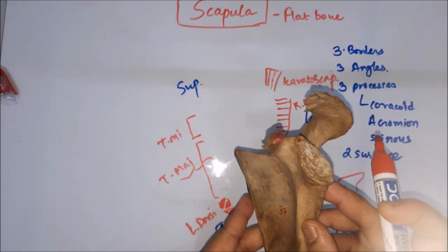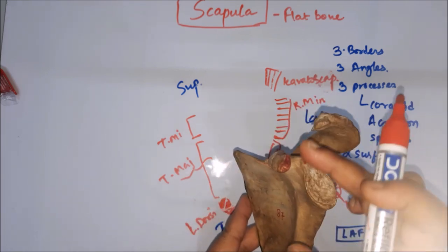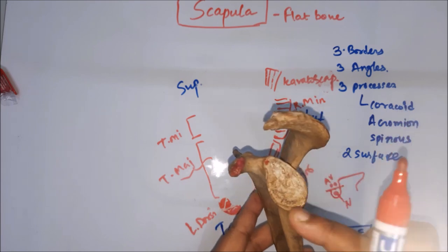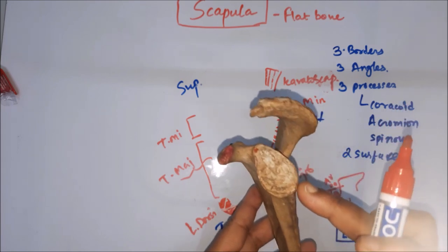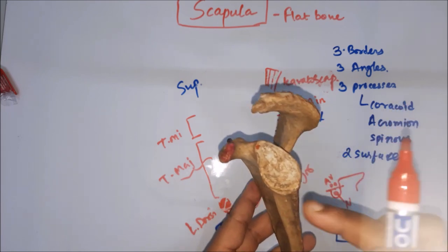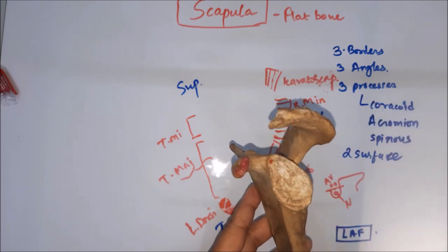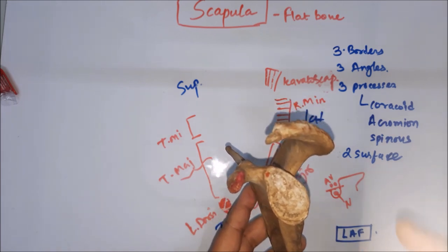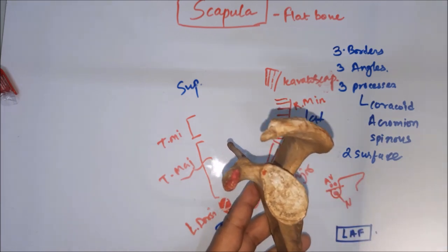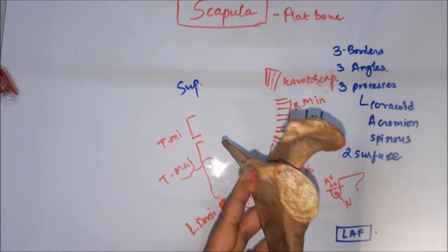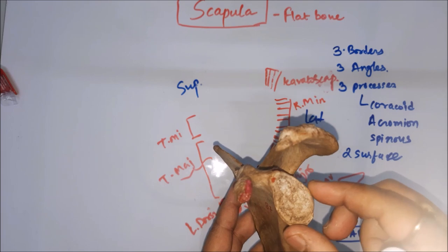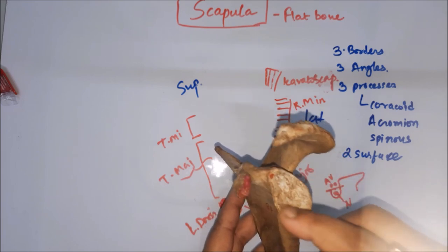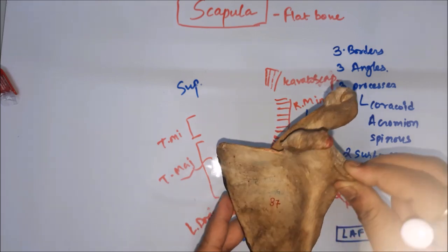On the borders of the glenoid cavity, there is a ligament known as the glenoid labrum, which deepens the cavity of the shoulder joint.